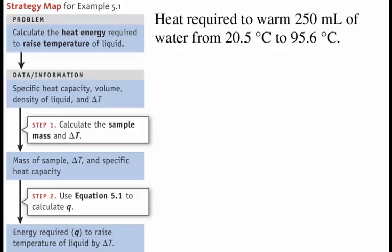This is the strategy map for example 5.1 in your textbook. In this example, what we would like to do is calculate the amount of heat that has to be transferred into warming up 250 milliliters of water, and we're going to raise the temperature from 20.5 degrees Celsius to 95.6 degrees Celsius.